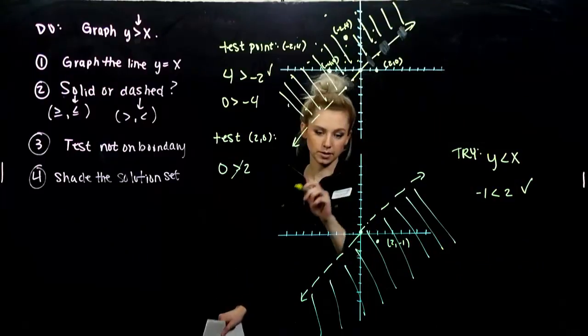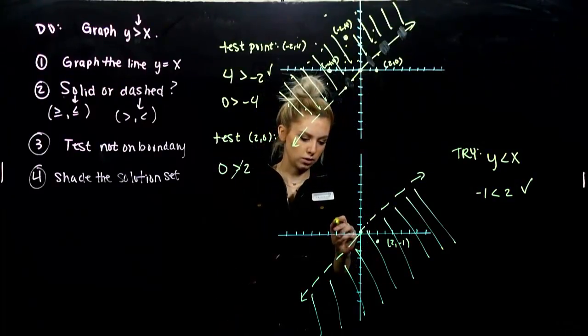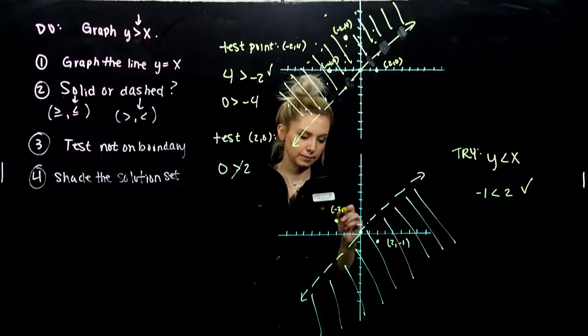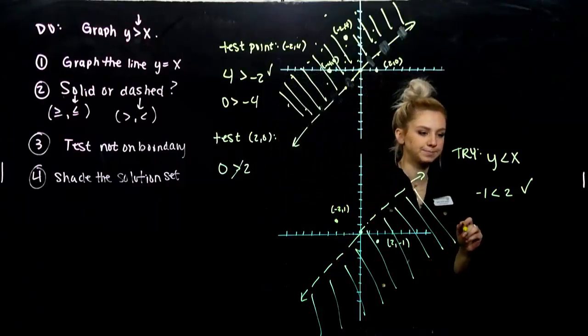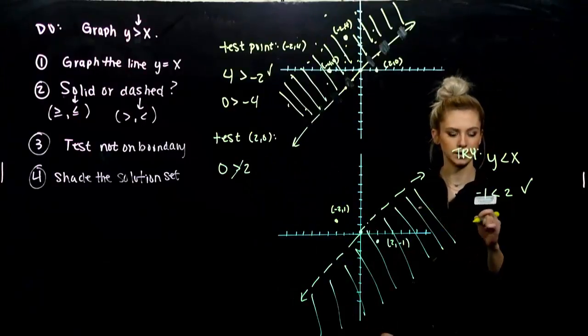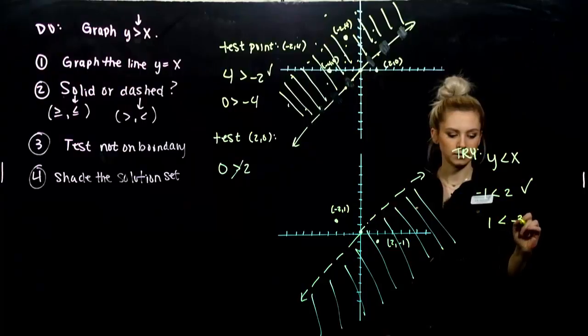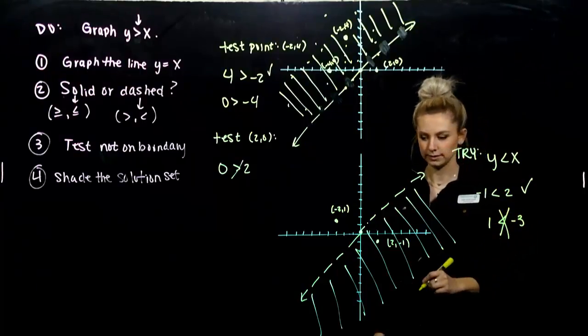Okay. You've also could have chosen something in the upper half plane, like minus three, one. And when we plug that in, it should come out to be false because that's not a part of our solution set. So let's see. Y is one. Is one less than minus three? No, it's not.